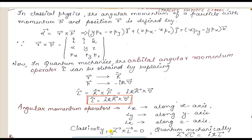Classically, L × L = 0. But in quantum mechanics, L × L is not zero — we get different results. So remember that this is our important formula.